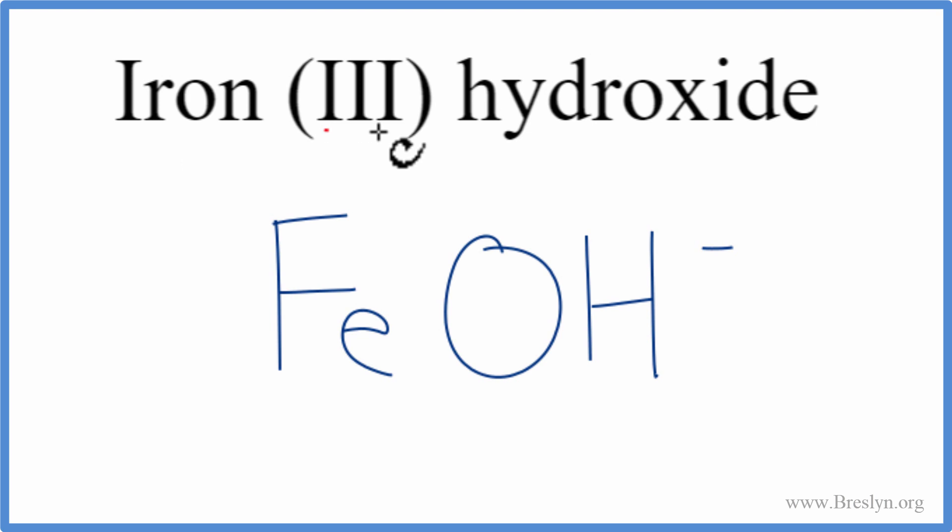Because it's called iron (III), this Roman numeral 3, that tells us this has an ionic charge of 3+. And the hydroxide, that has an ionic charge of 1-.